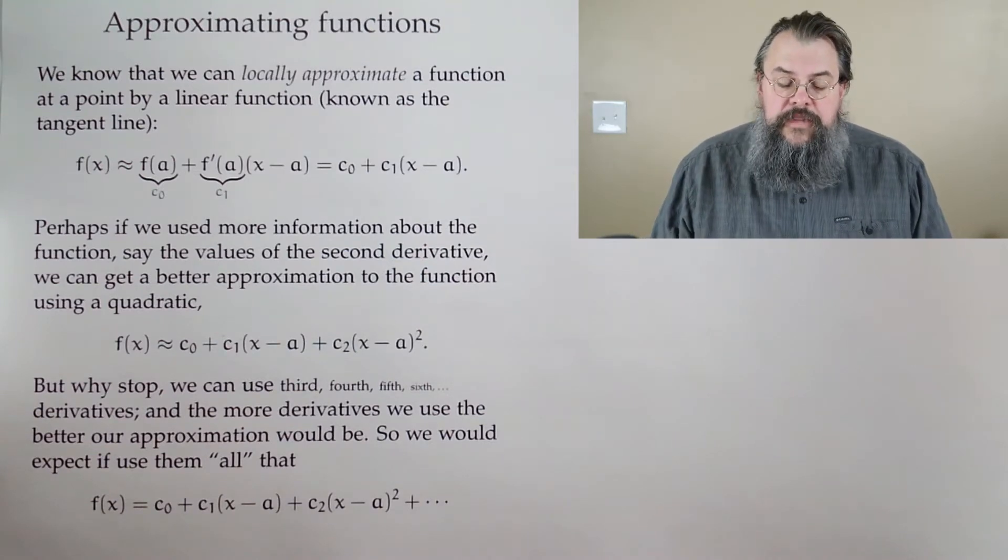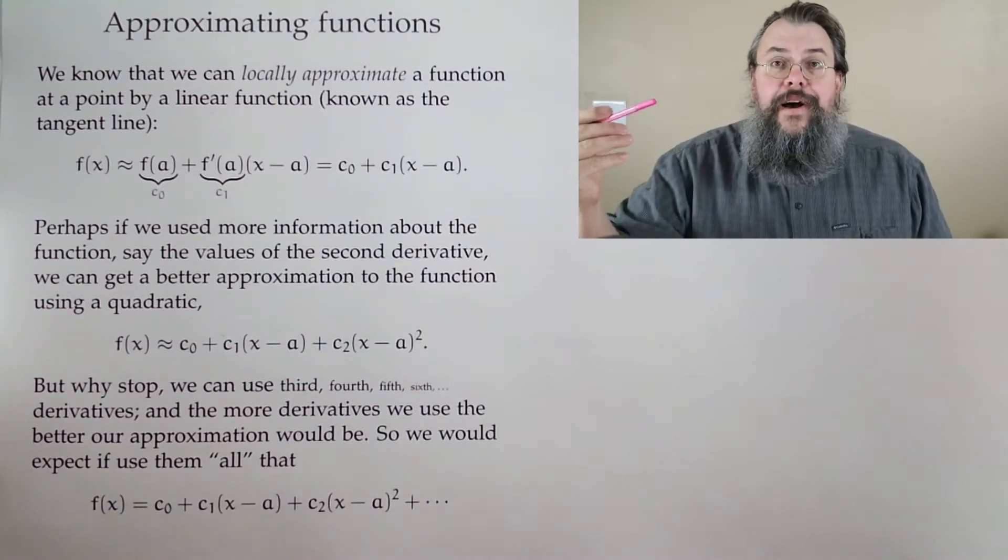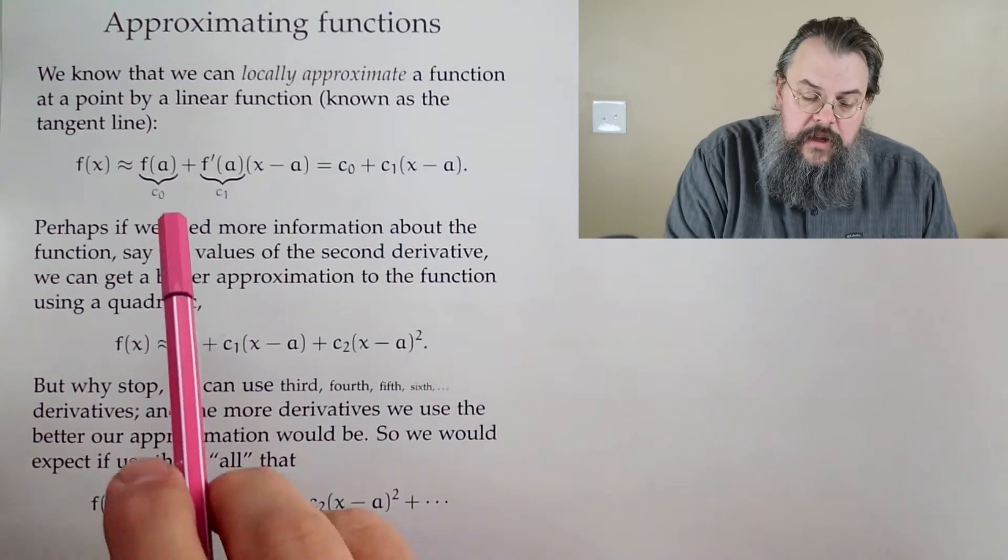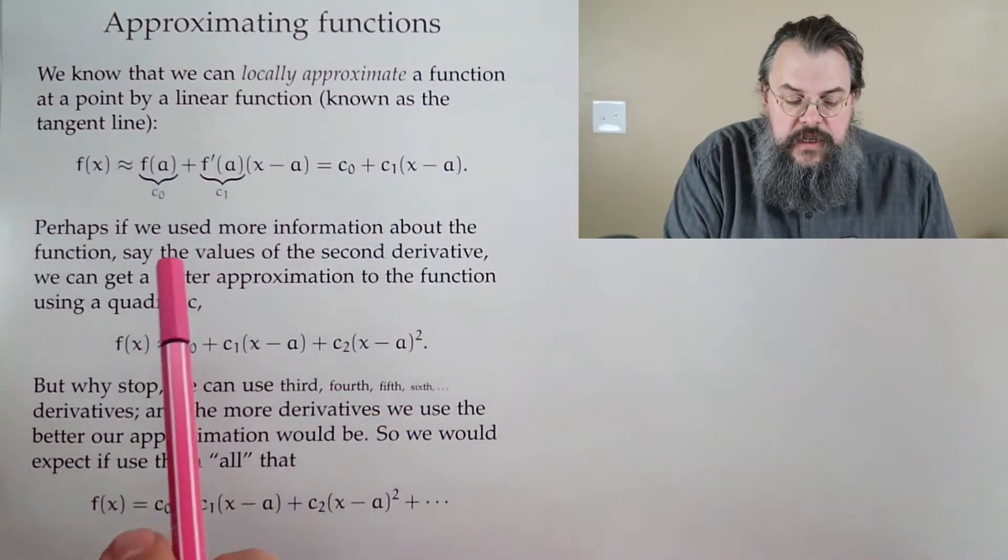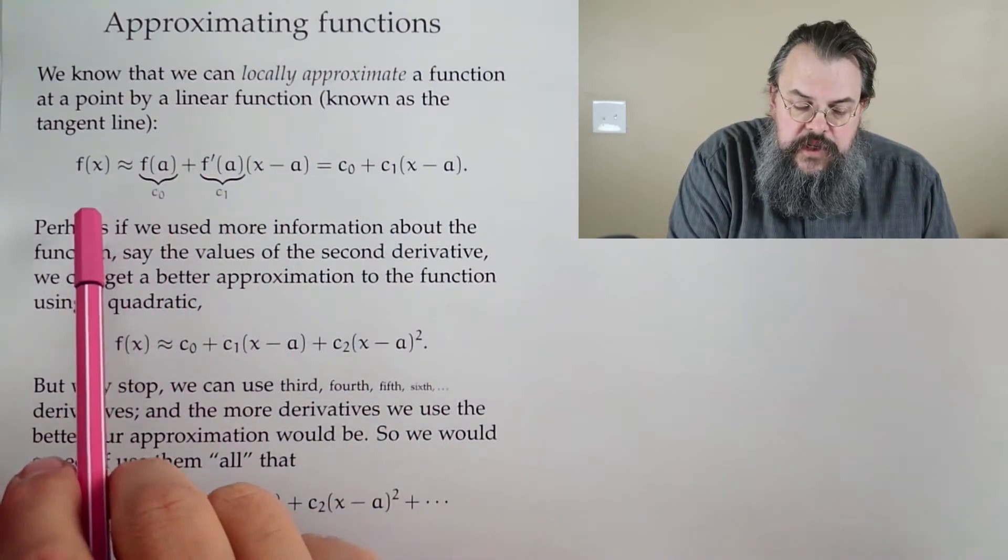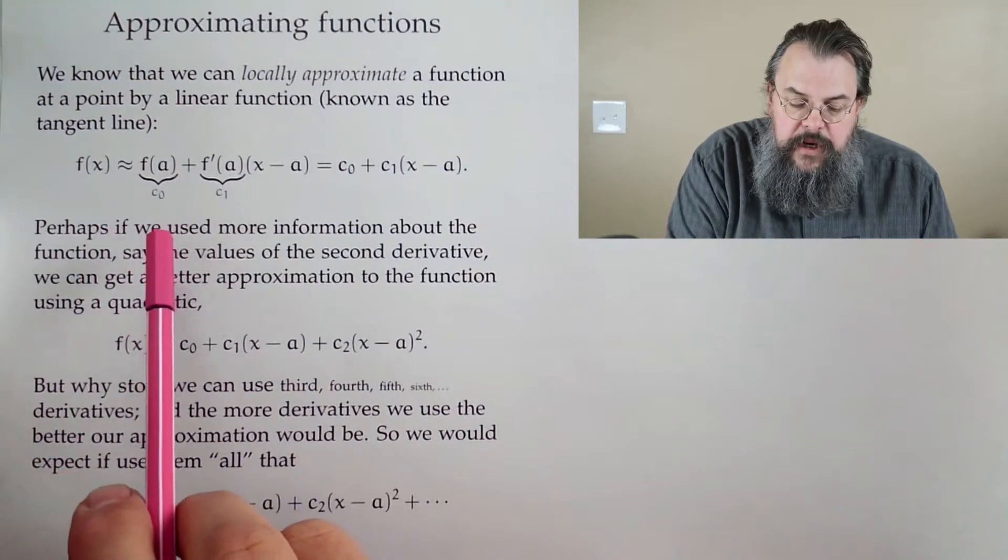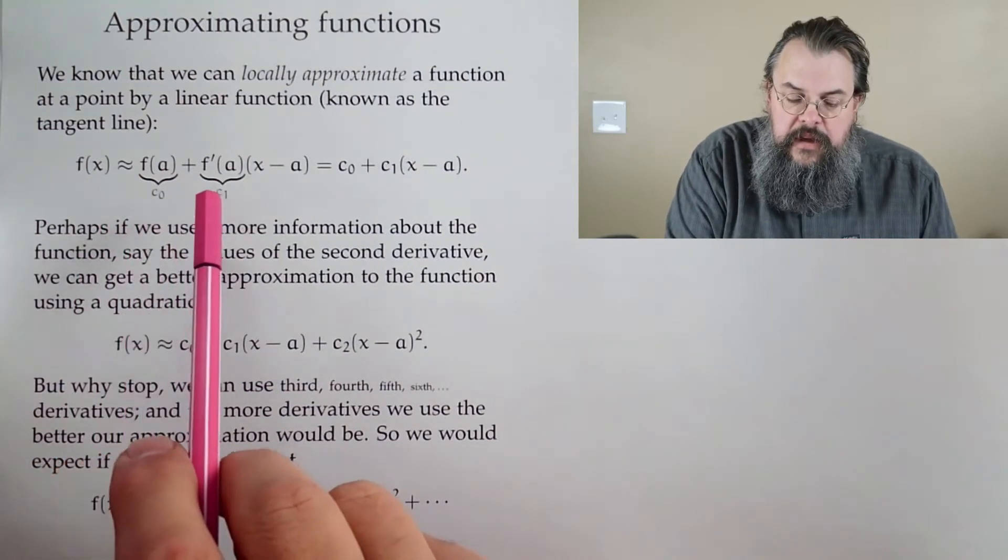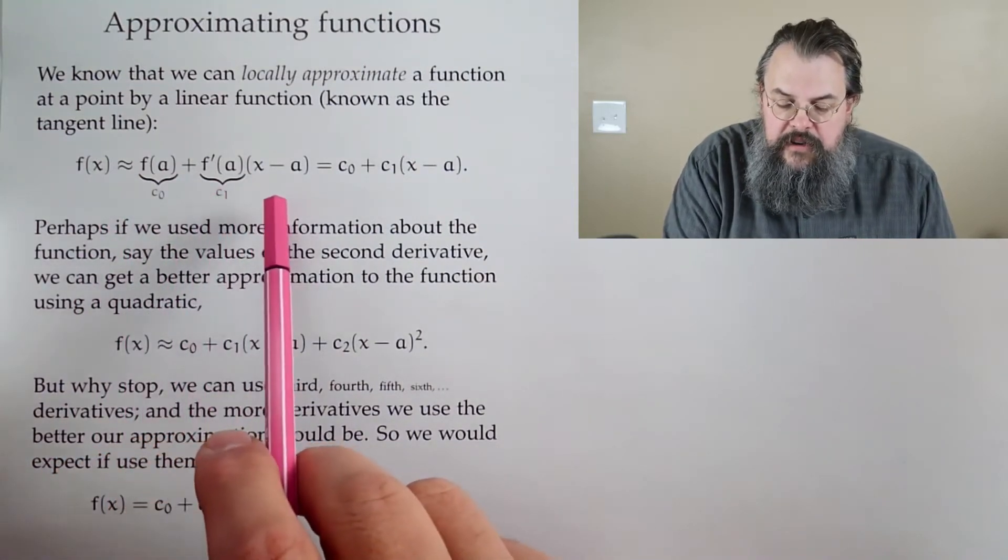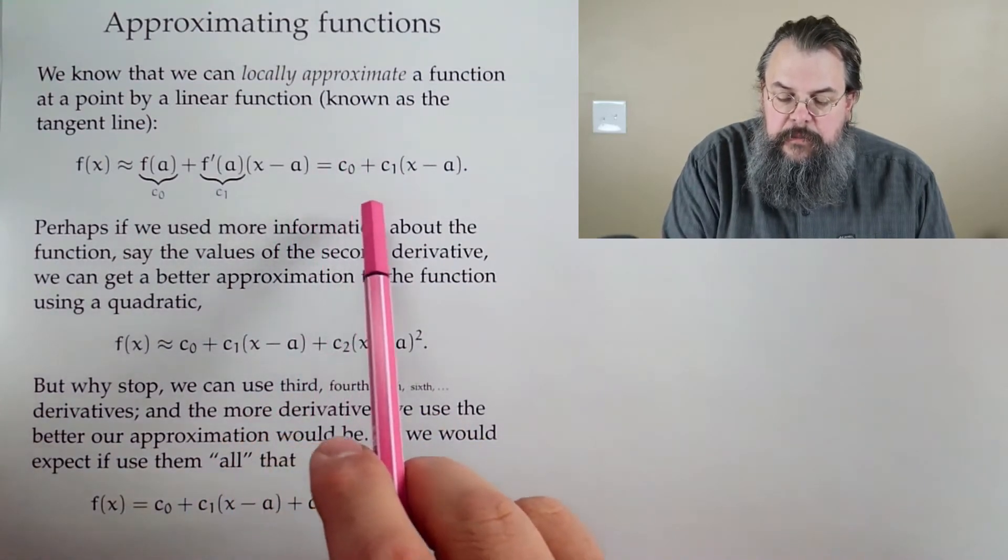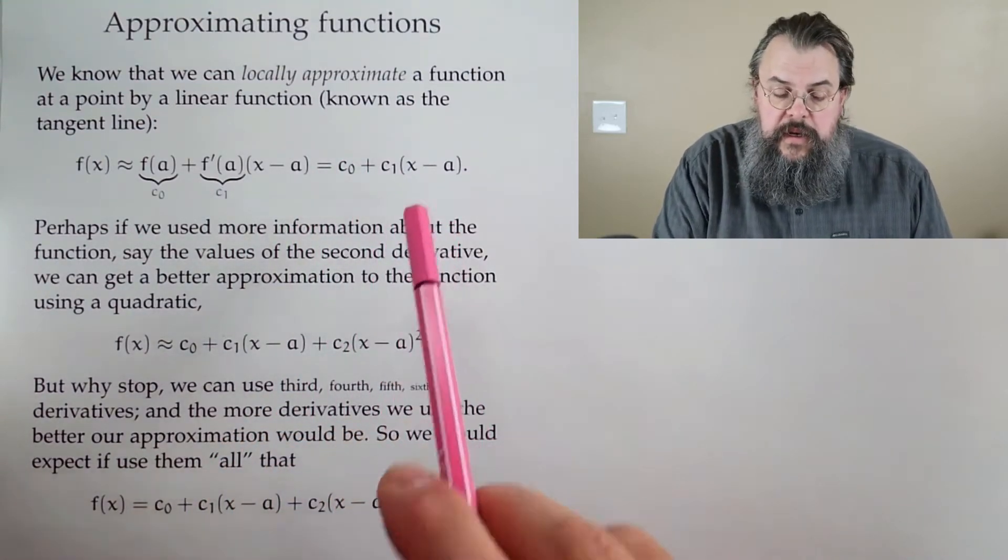We said, you know, we have these things called tangent lines. And so, a line is a linear function. And it says, look, the function, I can approximate it really well. It's the function of a, plus f prime of a, times x minus a. So it's some number c0, plus c1, times x minus a.